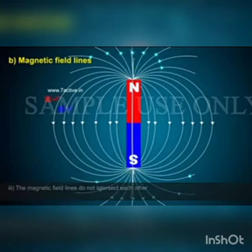The intensity of the magnetic field at a place can be indicated by the number of lines of force that pass through the unit area at that place, proportional to the area.